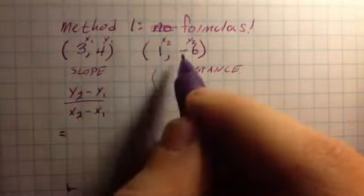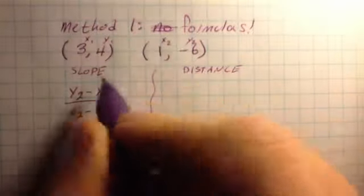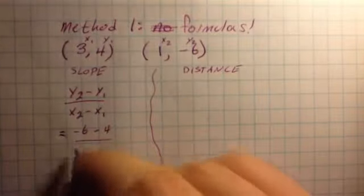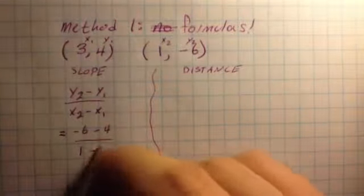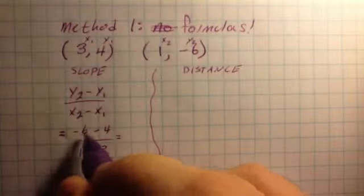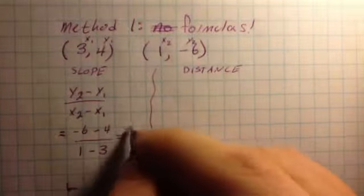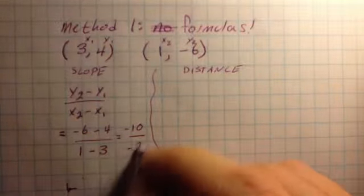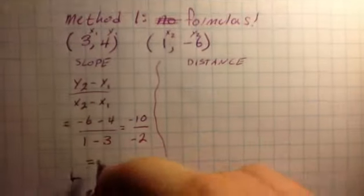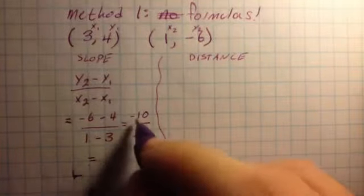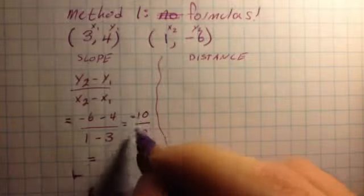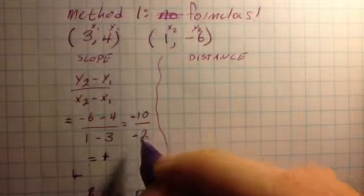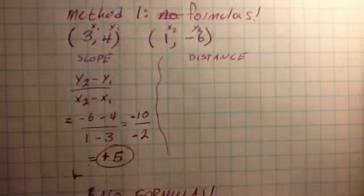My y2 is negative 6, my y1 is 4, so minus 4. My x2 is 1, my x1 is 3. So negative 6 minus 4 is negative 10. 1 minus 3 is negative 2. A negative divided by a negative is positive, and 10 over 2 reduces to 5, so my slope is 5.